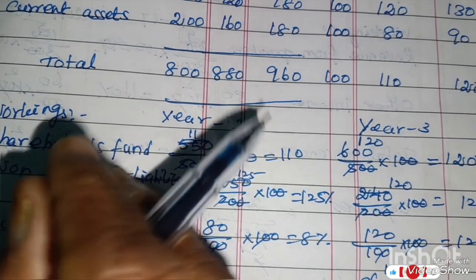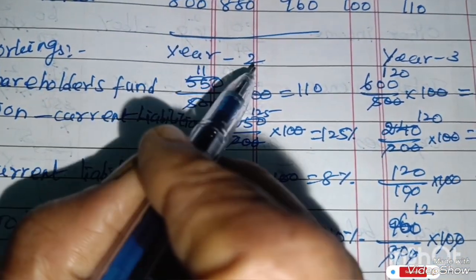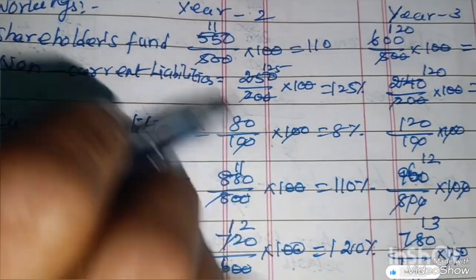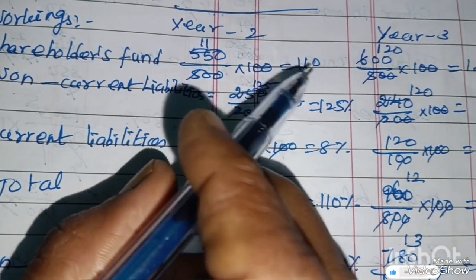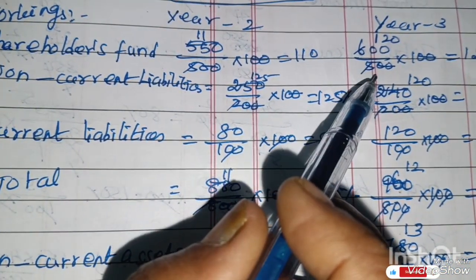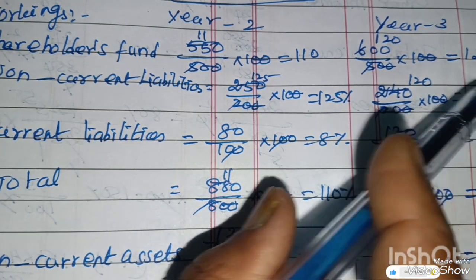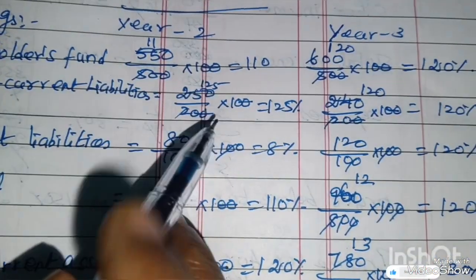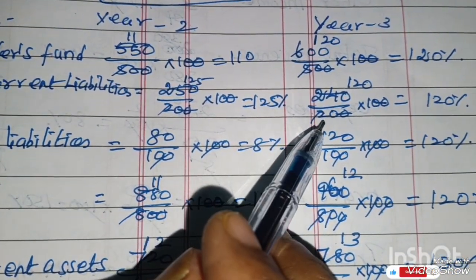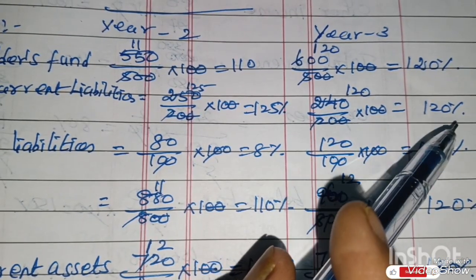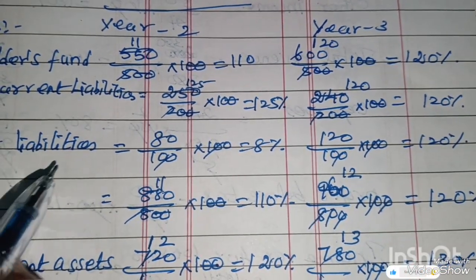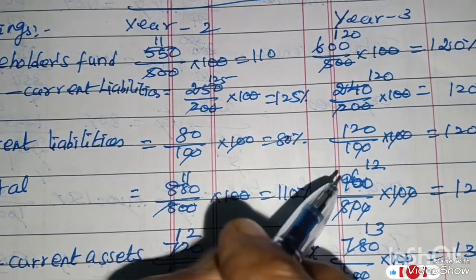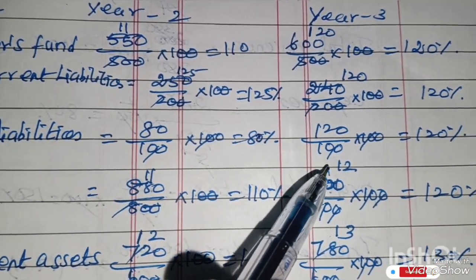Workings: For Year 1, all percentages are 100. For Year 2 and Year 3, divide by the base year value and multiply by 100. Shareholders Fund: 550 ÷ 500 × 100 = 110. 600 ÷ 500 × 100 = 120%. Non-Current Liabilities: 250 ÷ 200 × 100 = 125. 240 ÷ 200 × 100 = 120%. Current Liabilities: 80 ÷ 180 × 100 = 80% (approximately). 120 ÷ 180 × 100 = 120% (approximately).